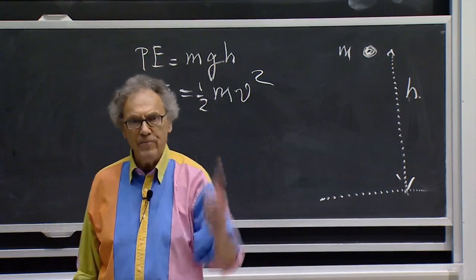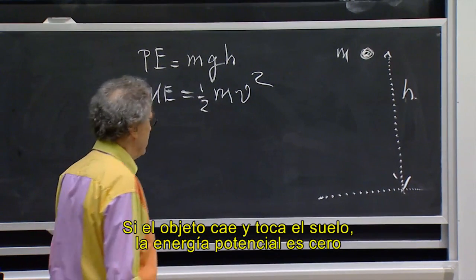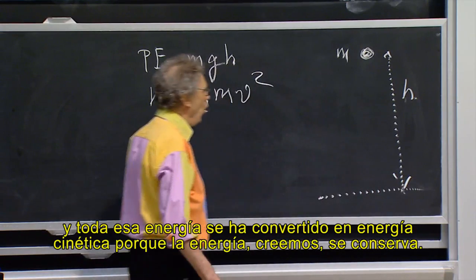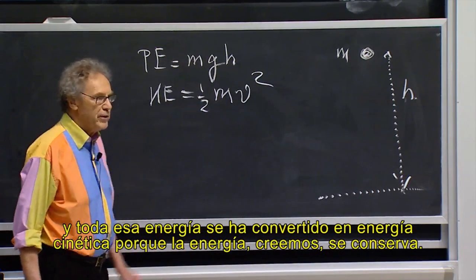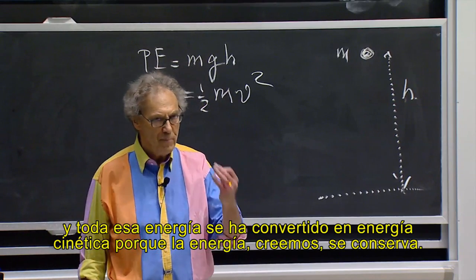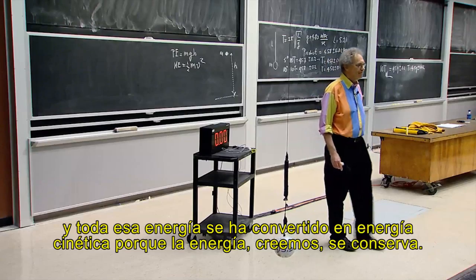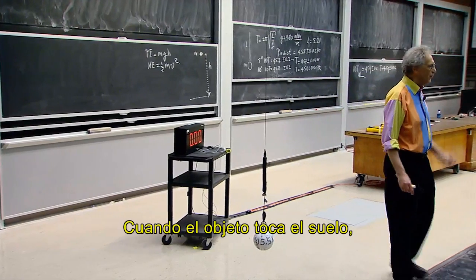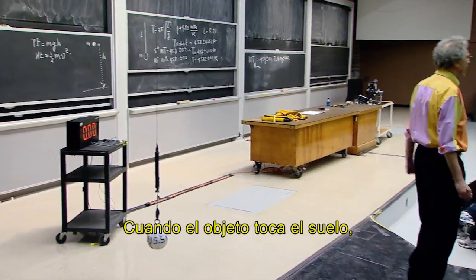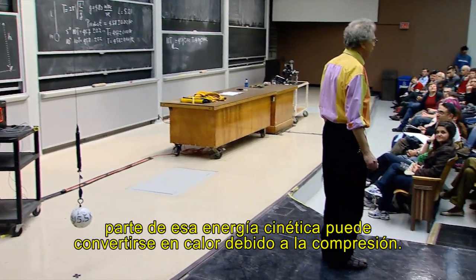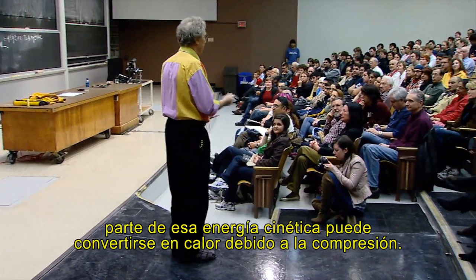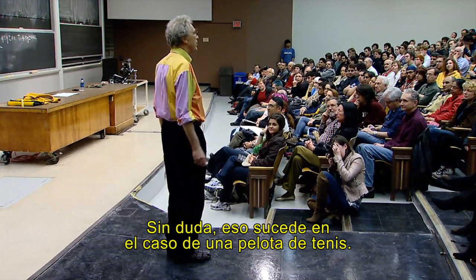If the object goes down and hits the floor, then the potential energy is zero and all that energy is now converted to kinetic energy, because energy we believe is conserved. Now, when it hits the floor, some of that kinetic energy may be converted into heat because of the compression. If it were a tennis ball, that would certainly happen.